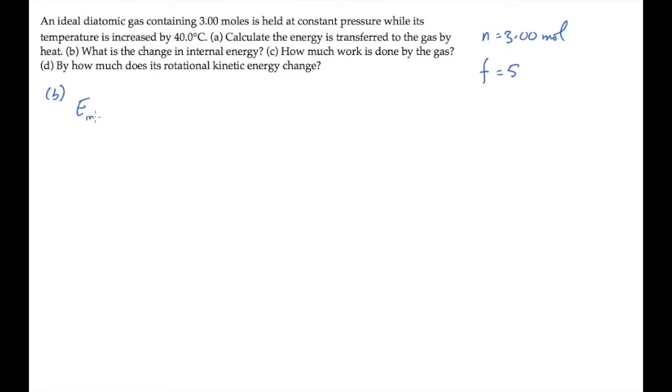We know from the equipartition theorem that each molecule has 1/2 kT of energy per degree of freedom. The internal energy of n moles then equals the number of degrees of freedom divided by 2 times nRT. With F equals 5, the change in internal energy equals 5/2 nR delta T. You can substitute values to find that this equals 2.49 times 10 to the third joules.